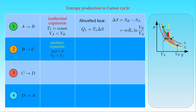The second step of the cycle is an adiabatic expansion between states B and C, where no heat is exchanged between the working substance and its surroundings, and the initial volume V_B is smaller than the final volume V_C. Since there is no heat absorbed or rejected by the system, there is no change in entropy S of the working substance, and this step is an isentropic process.